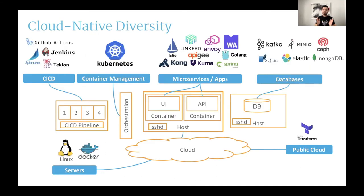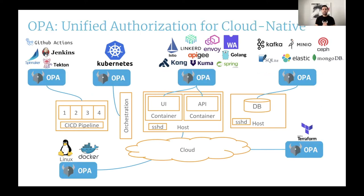If you look at the cloud-native landscape, there are new projects that get added every single day — a new database, a new service mesh, or a new gateway. If you are building a system comprising these projects, you're going to have a lot of moving parts. When you think about security, especially authorization, each of these projects are written in different programming languages with their own way of controlling access, so you end up with no visibility into the security posture of your system. This is one of the motivations behind the creation of OPA.